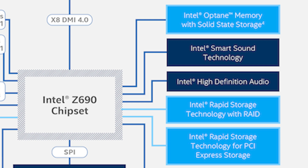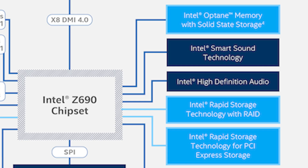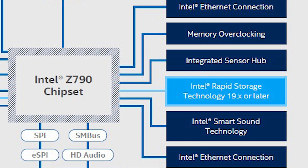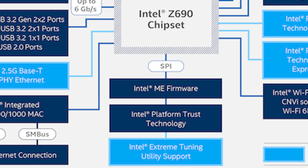You'll notice the SATA ports and everything on the lower end is practically the same from the motherboard standpoint. On the right-hand side, there are slight improvements such as Intel Optane memory with SSD support. The Z690 also features Intel Smart Sound Technology, Intel High Definition Audio, Intel Rapid Storage Technology with RAID, and Intel RST for PCIe storage. The Z790 doesn't emphasize RAID drives as much, but it does have memory overclocking, an integrated sensor hub, SPI, ESPI, SMBUS, and HD audio. Overall, it's mostly the same — just rebranded as Z790.